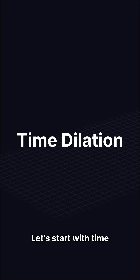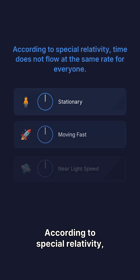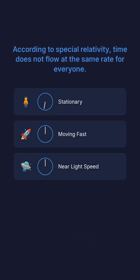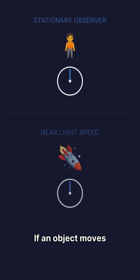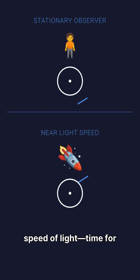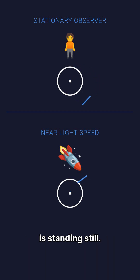Let's start with time dilation. According to special relativity, time does not flow at the same rate for everyone. If an object moves very fast, close to the speed of light, time for that object slows down relative to someone who is standing still.